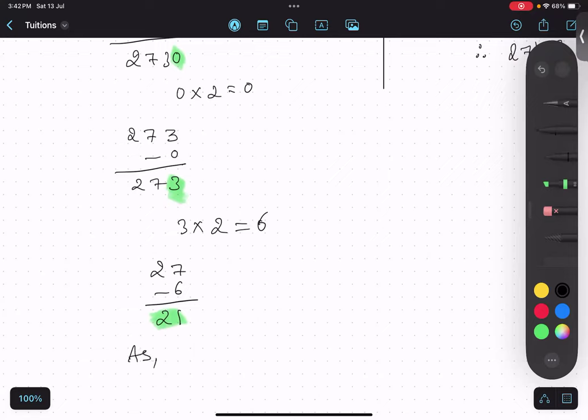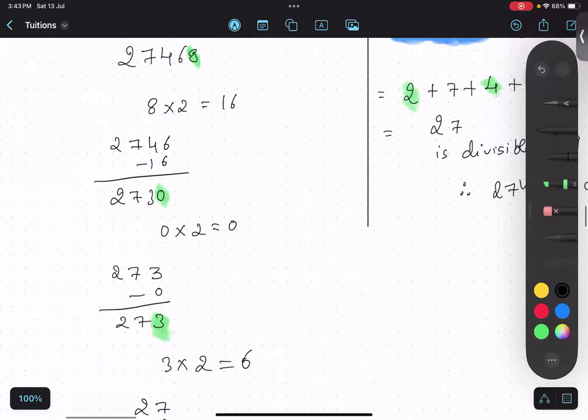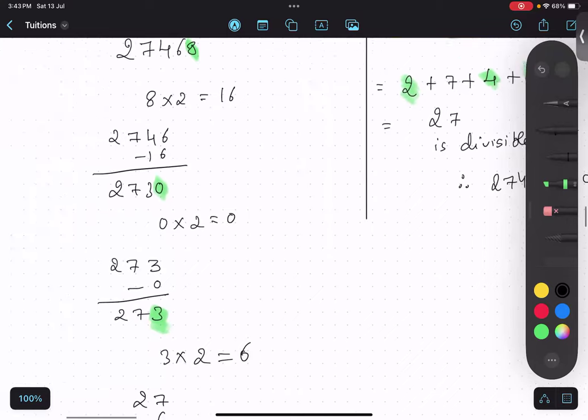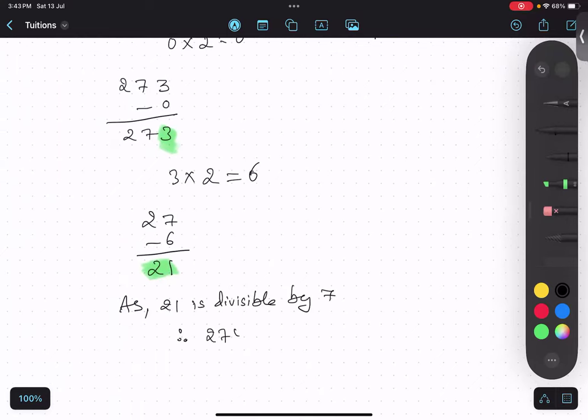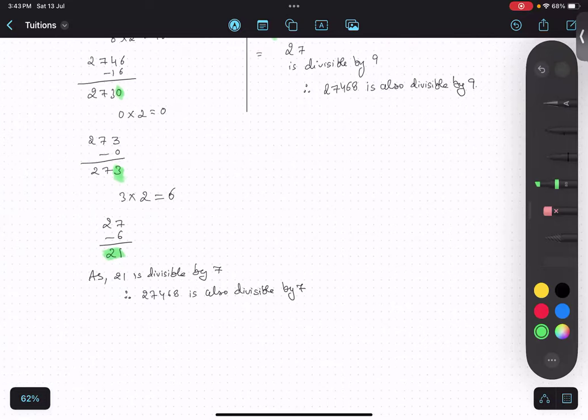So as 21 is divisible by 7, therefore the number 27468 is also divisible by 7. Now this is divisible by 9 also, this is divisible by 7 also, so we will write our final conclusion.